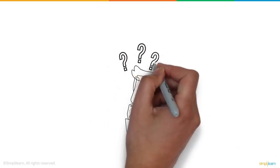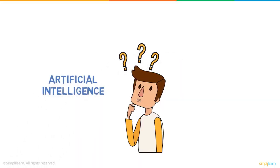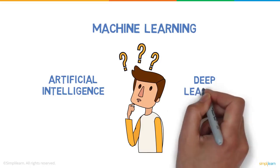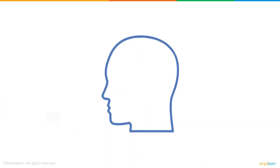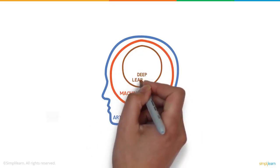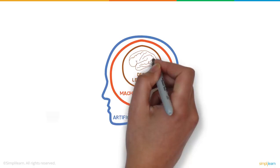You must be wondering, how is artificial intelligence different from machine learning and deep learning? We saw what AI is. Machine learning is a technique to achieve AI, and deep learning, in turn, is a subset of machine learning.